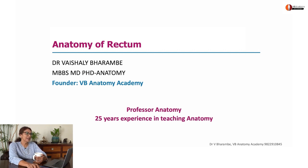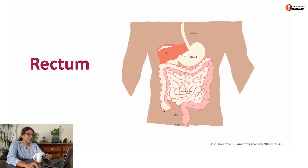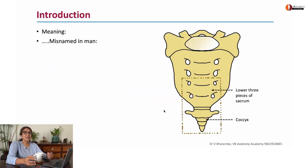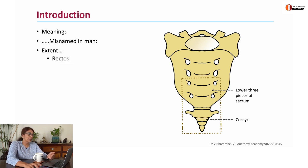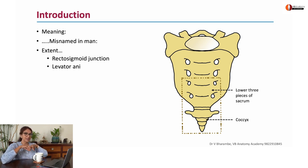Today we are going to be discussing the gross anatomy of rectum. The word rectum means a straight tube, but of course in humans it is not a straight tube — it's a misnomer. It extends downwards from the rectosigmoid junction to the point where it passes through the levator ani to form the anal canal.